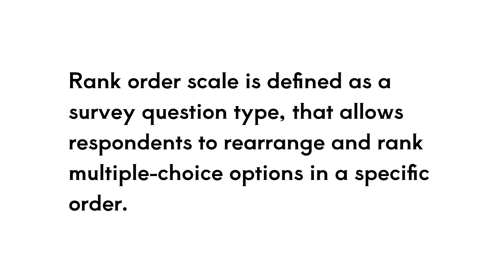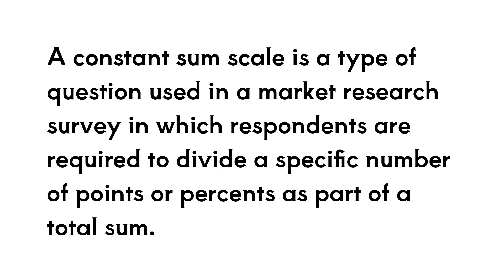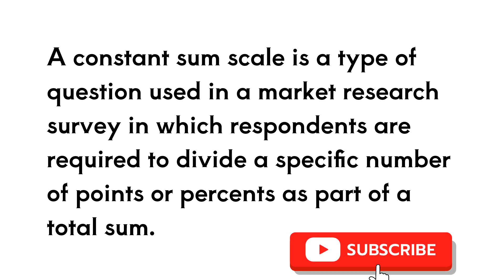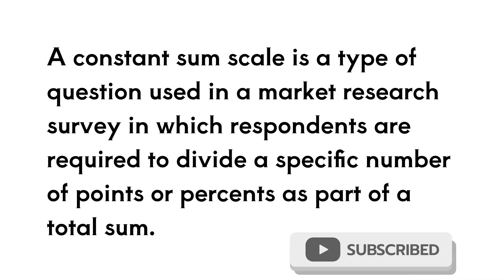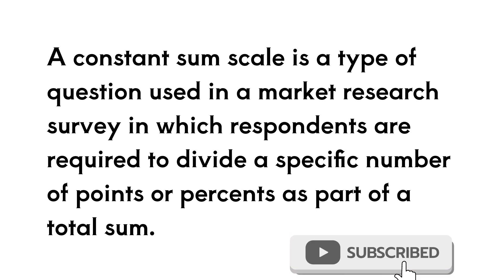Next is the Constant Sum Scale. One hundred points are given to the respondents to distribute according to importance. For example: 20 dollars for entertainment, 30 dollars for utilities, 10 dollars for miscellaneous expenses — respondents allocate points to show the percentage of importance of each amount.